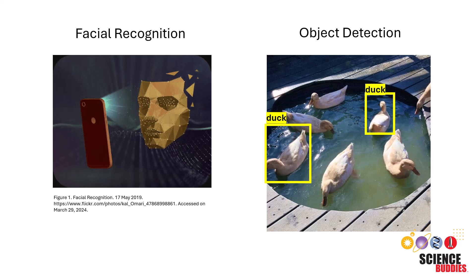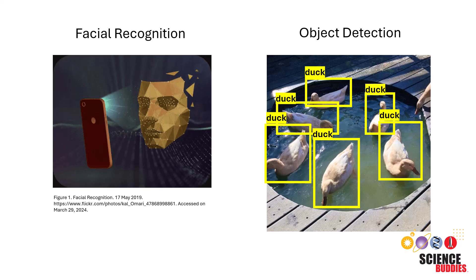In image recognition, Siamese networks are often used in tasks such as facial recognition and object detection.